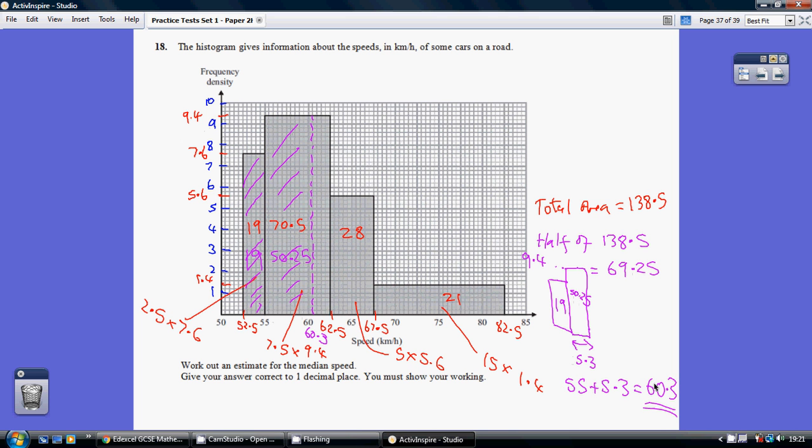So that's my final answer. Just to summarize, the area of this bar is 19, the area of this purple part of this bar here is 50.25. Those two purple areas added together are 69.25, and that's taking up half of the total area of 138.5. Hence, it's the median.